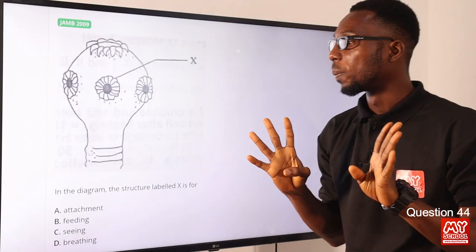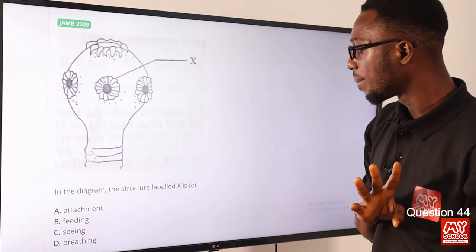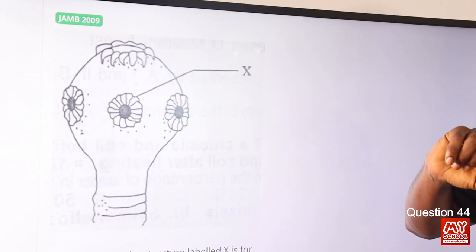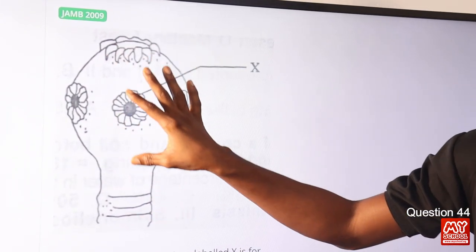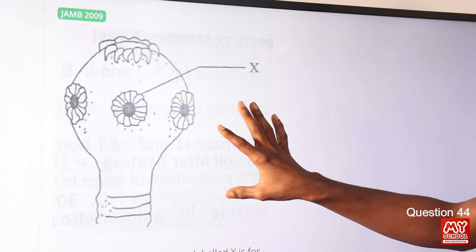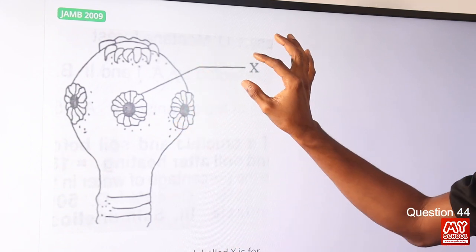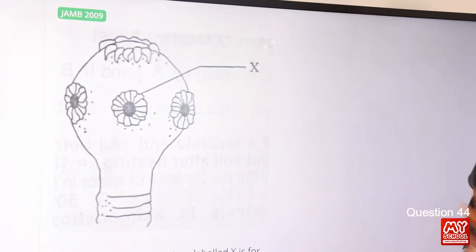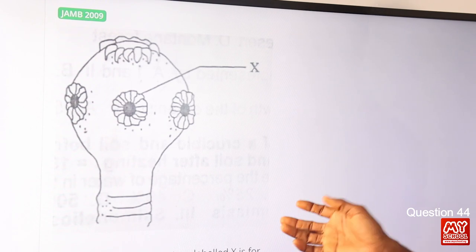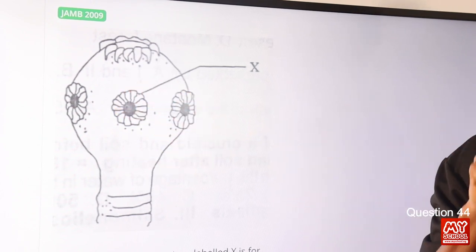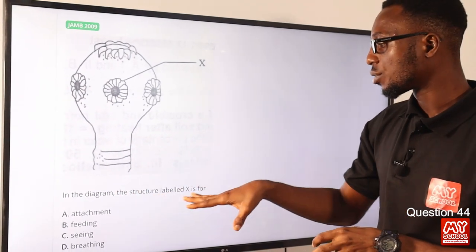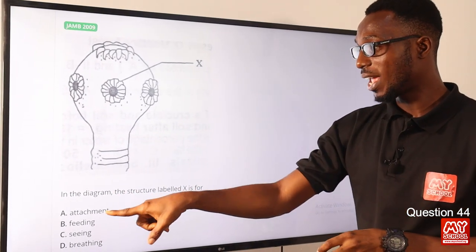Question 44: In the diagram, the structure labeled X is for attachment. The diagram shows the scolex — the head of a typical tapeworm — with suckers and hooks around the rostellum. This structure is responsible for secure attachment to the intestine to avoid dislodgement. The correct option is option A for attachment.